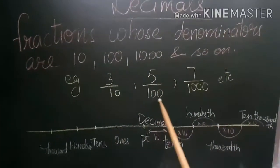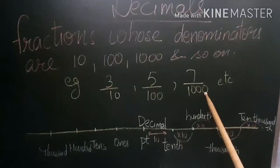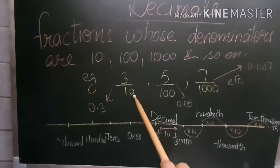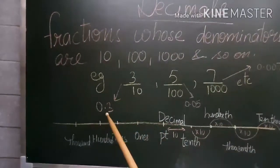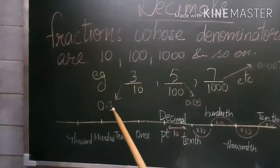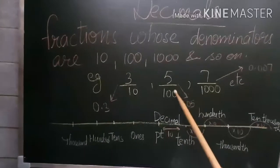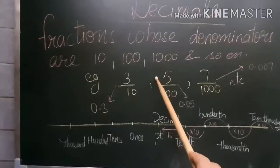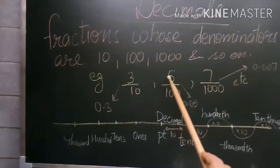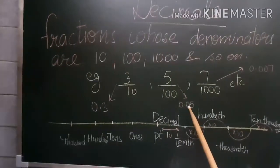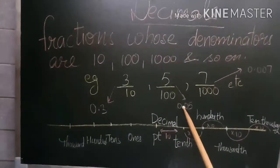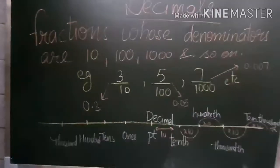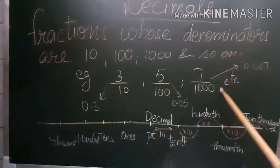Let us see how fractions can be converted into decimals. For example, 3 by 10 in decimal form can be written as 0.3. For 5 by 100, there are two zeros, so we put the decimal before two places. Since we have only the digit 5, we write zero in front of it, making it 0.05.